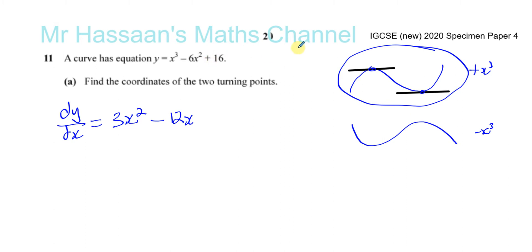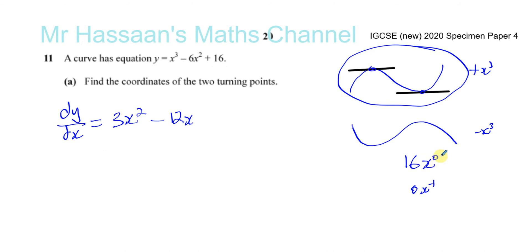Just for your information: if you have 16, you can think of it as 16x to the power of zero, because anything to the power of zero equals one. If you differentiate that, you multiply by the power — zero times 16 — and you'd have zero x to the power of minus one. The whole thing becomes zero, so any constant just becomes zero.